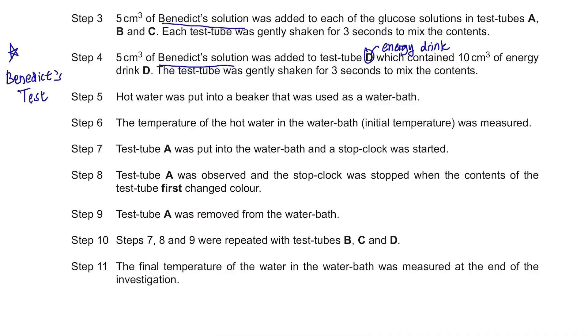Now they are going to carry out Benedict's test. Test tube A was put into the water bath and a stop clock was started. Test tube A was observed and the stop clock was stopped when the content of the test tube first changed color. Test tube A was removed from the water bath. Steps 7, 8 and 9 were repeated with test tubes B, C and D. The final temperature of the water in the water bath was measured at the end of the investigation.